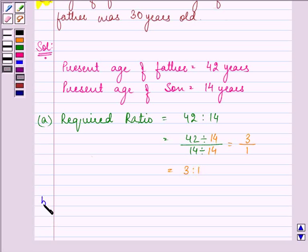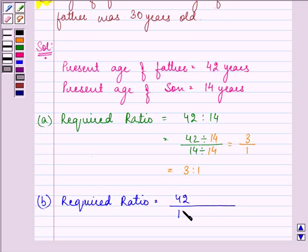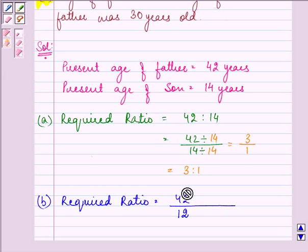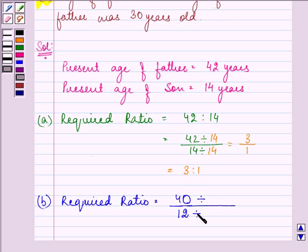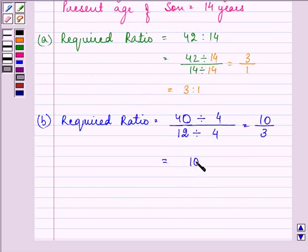Now, proceeding on to the B part. Here, the required ratio is age of father to the son when son was 12 years old. When son was 12 years old, that means 2 years ago, father will also be 40 and not 42. So, let us divide these two by their HCF and here the HCF is 4. So, the answer comes out to be 10 upon 3. That is 10 is to 3.